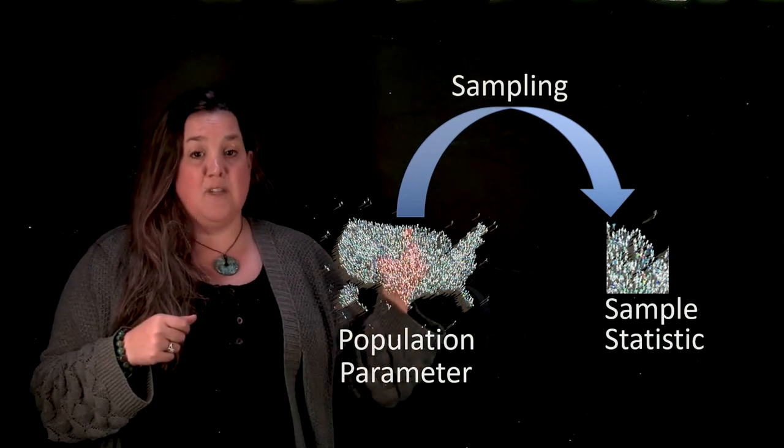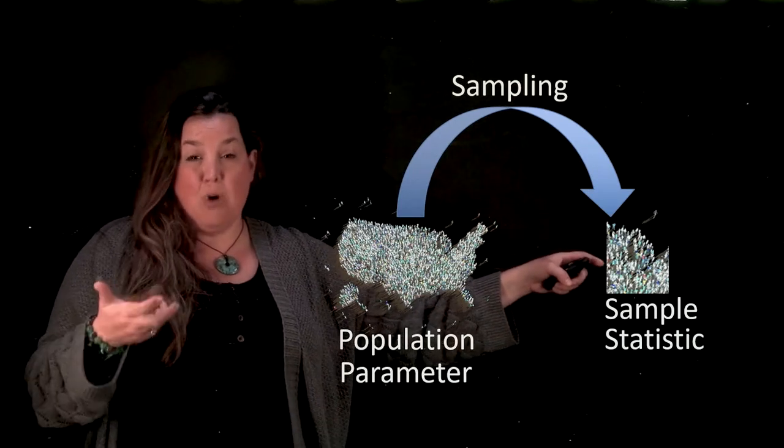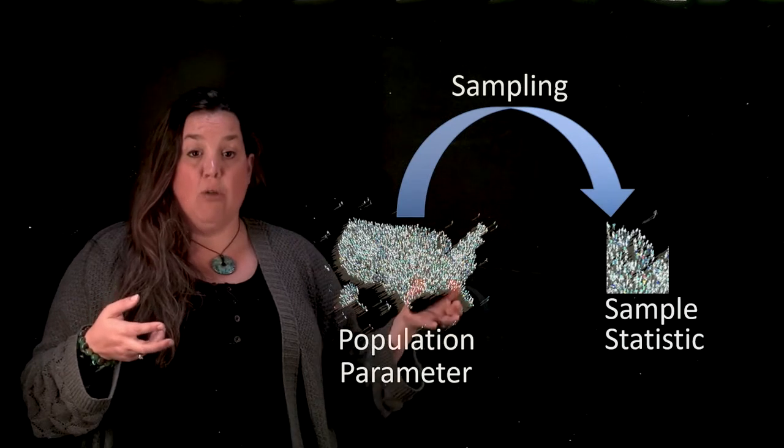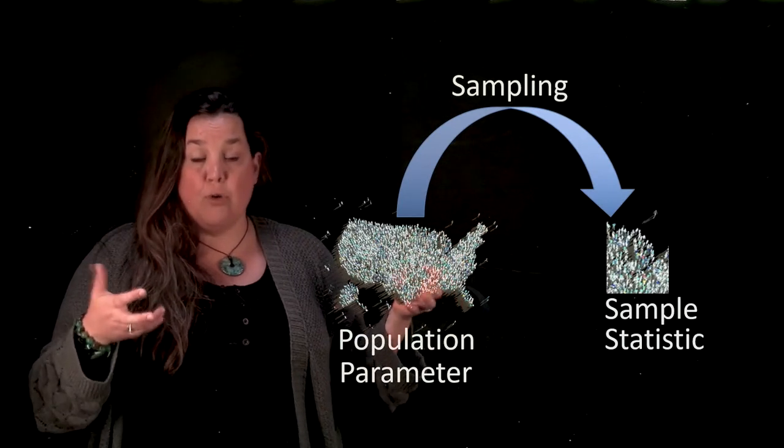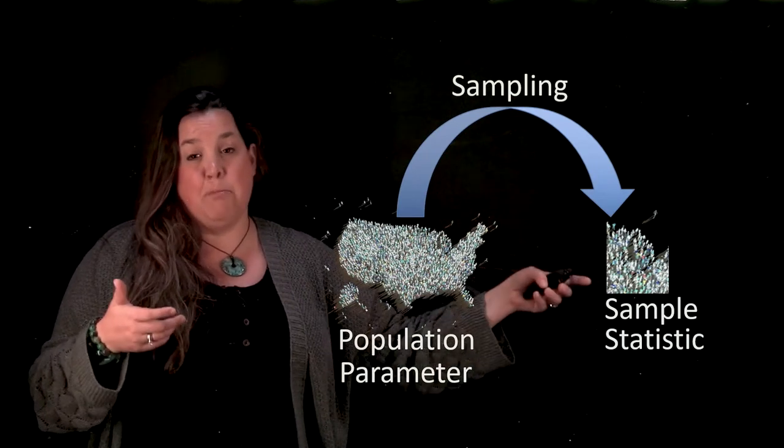So that process of taking a population and getting a smaller group or a subset would be called sampling and the result of that is a sample. So you take a large group or that whole entire group and then you subset it so you get a smaller group or part of it and that would be called a sample.